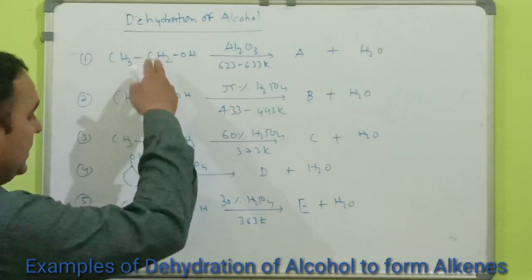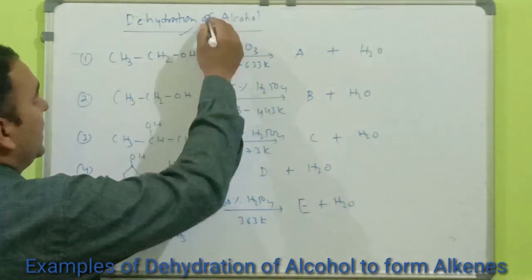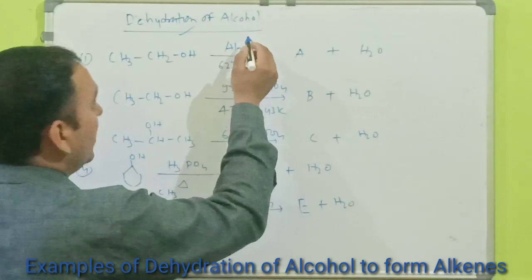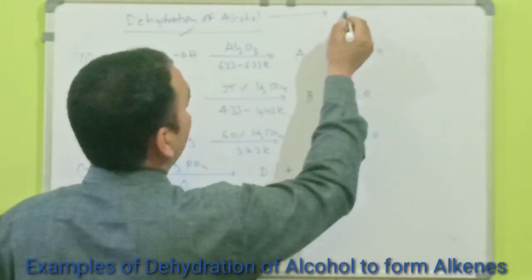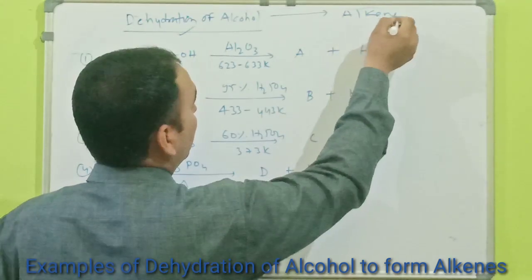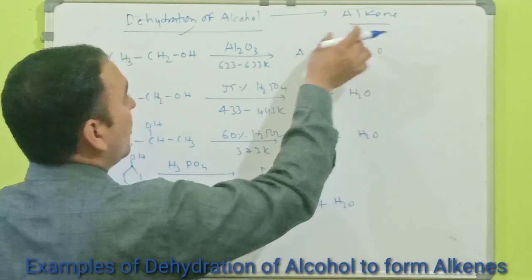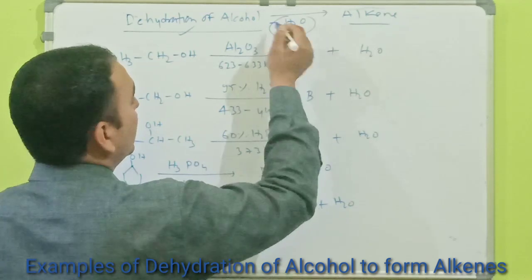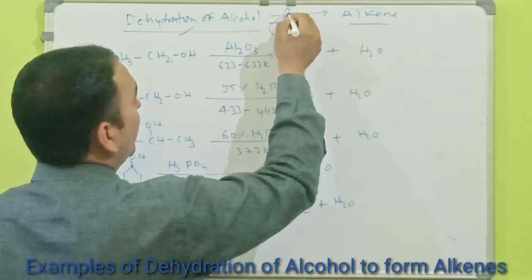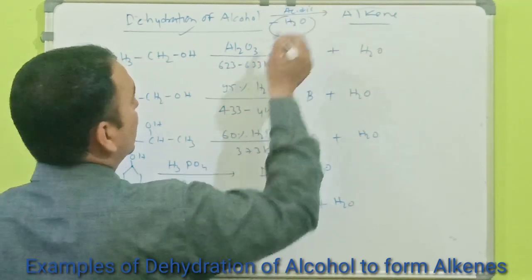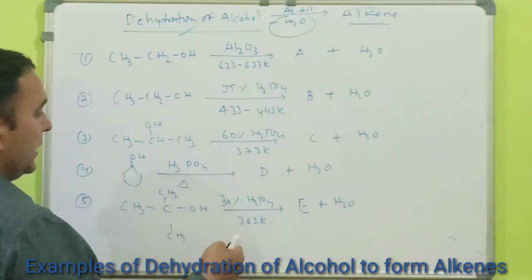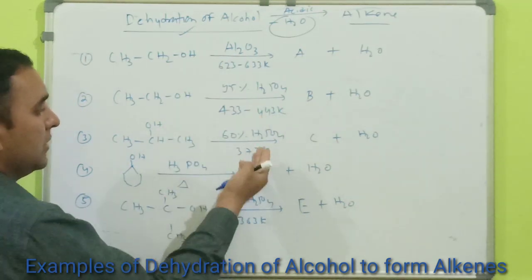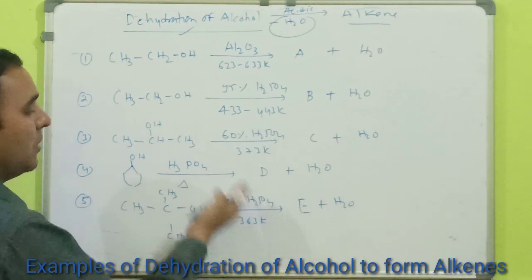These questions are based on dehydration of alcohol. When dehydration of alcohol is done, it will form an alkene, and this alkene formation takes place by removal of water in the presence of acid. In all these cases, sulfuric acid is used as a reagent, and some amount of temperature is also required.